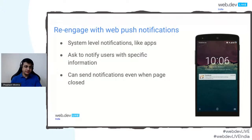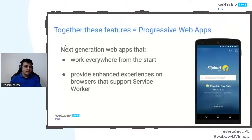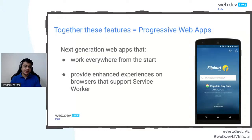PWAs support re-engagement through web push notifications. These are system-level notifications like native applications, and they can be used even when the browser is not open or when your site is not in focus. The service worker is installed on the device, it can wake up to receive notifications and pass them on to the user. This logic is completely customizable — you can group notifications, show multiple notifications, and all this logic can be developer-driven. Taking all these features together — service workers, push notifications — we get Progressive Web Apps, which work seamlessly across a variety of network conditions.